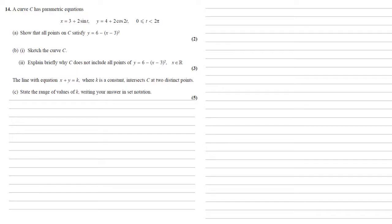So our first thing is to notice that the parametric equations have got sine and cos in them. If we can rearrange these to get sine equals and cos equals, we can use some identities to create our equation. So x equals 3 plus 2 sin t, we'll rearrange to make x minus 3 over 2 equals sin t, and the y equation we'll rearrange to make y minus 4 over 2 is equal to cos 2t.